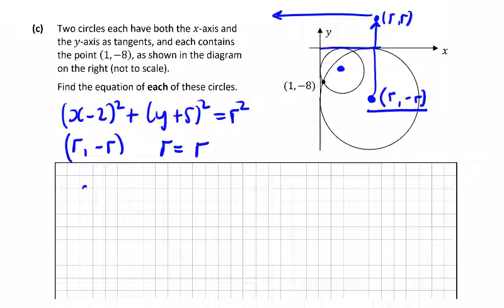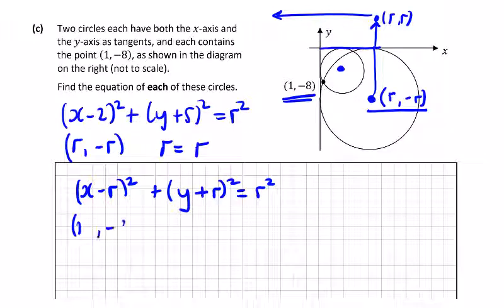So let's have a look here. We have x, I'll put the 1 minus 8 in a minute. We have x minus r squared, plus y plus r squared is equal to r squared, and I also have the point 1 minus 8 on this circle.